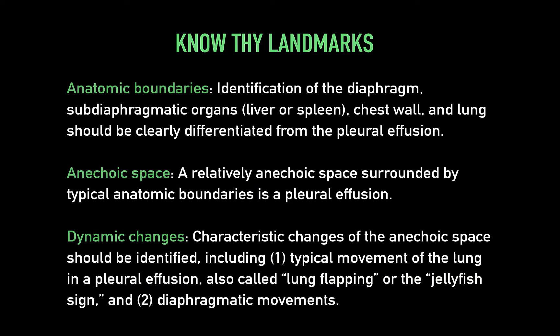Anatomic boundaries and pleural effusion assessment are critical. You really want to find the diaphragm, the subdiaphragmatic organs like liver or spleen, the chest wall, and lung — this helps to clearly differentiate the pleural space. You may even have to look for the kidneys to help orient you. Dynamic changes such as lung flapping or the jellyfish sign, where the tail of the lung whips back and forth in the anechoic space, may help identify the pleural space. However, atrophied spleens and mesenteric fat may have a similar appearance, so be 100% clear which space you're looking at.